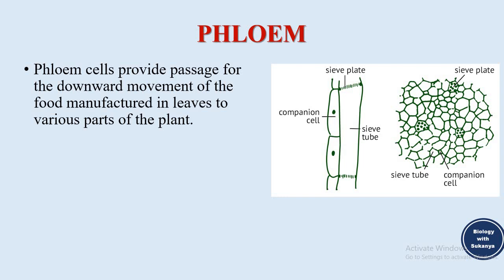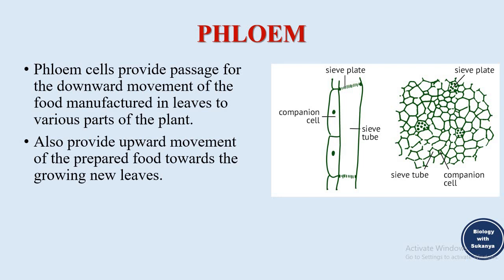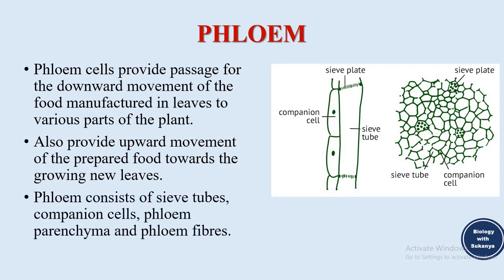Phloem cells provide passage for the downward movement of food manufactured in leaves to various parts of the plant. Leaves perform photosynthesis to produce food, which the phloem distributes to all plant parts. Phloem also provides upward movement of prepared food towards growing new leaves. The phloem consists of sieve tubes, companion cells, phloem parenchyma, and phloem fibers. With that we come to the end of plant tissues.